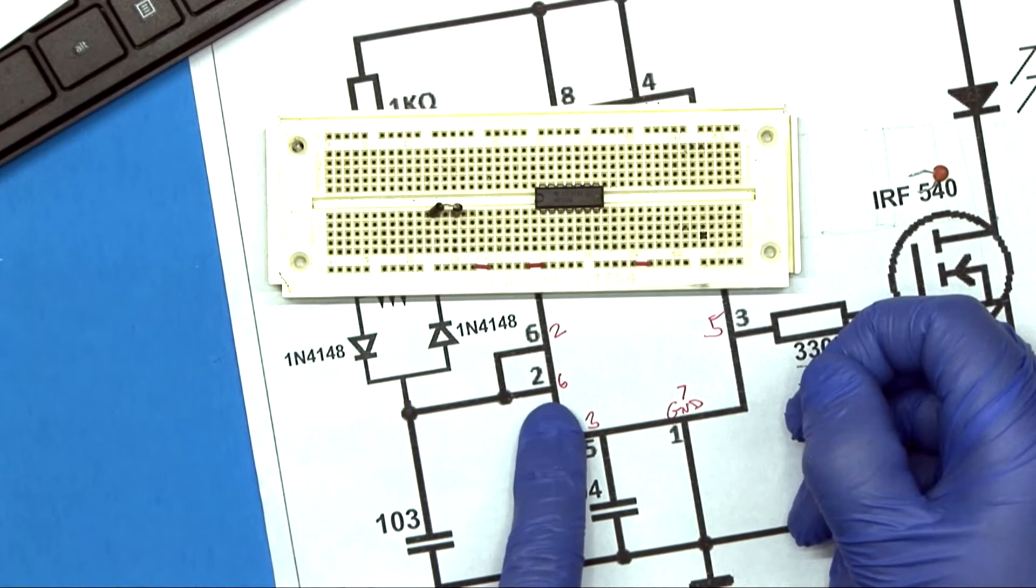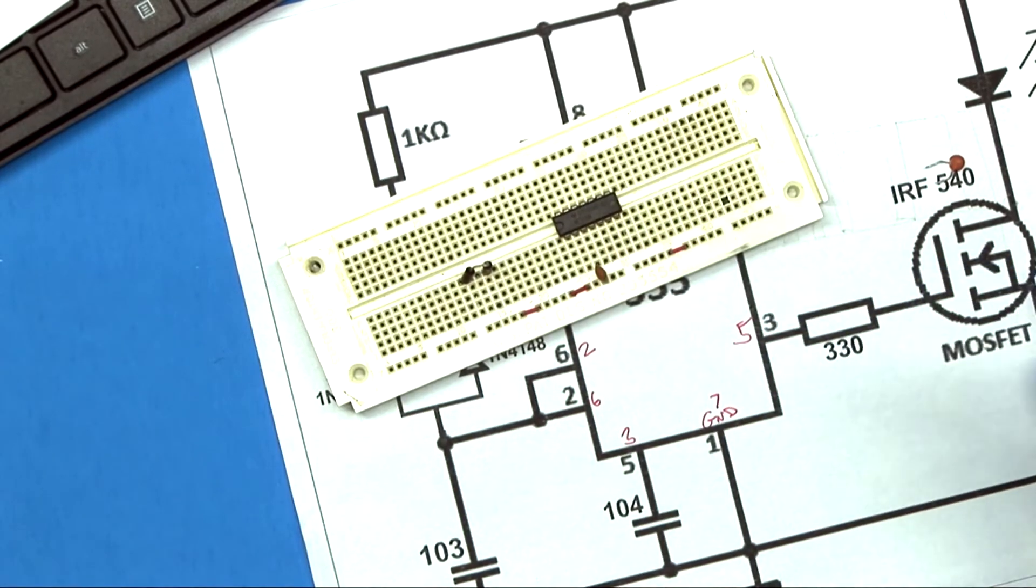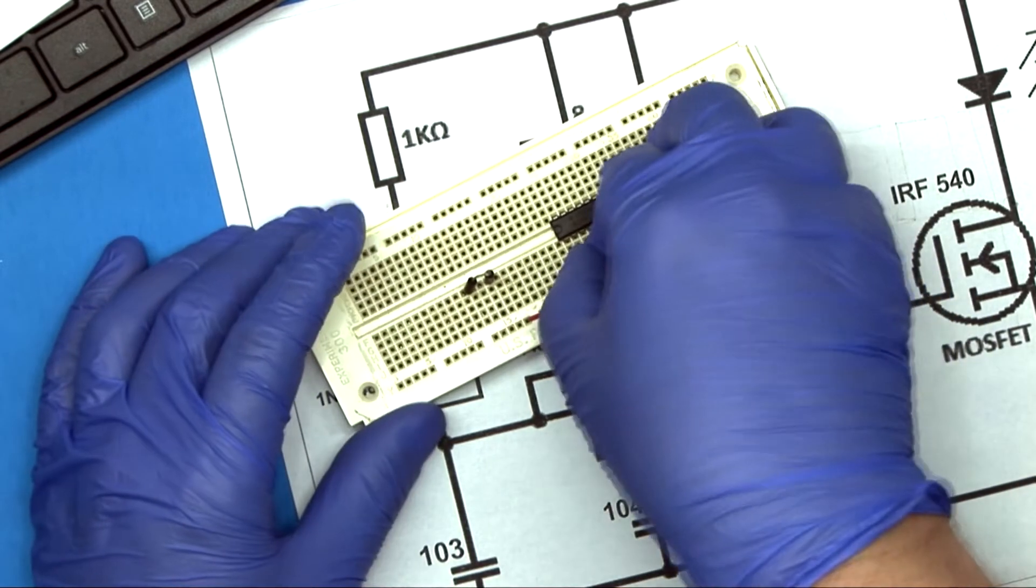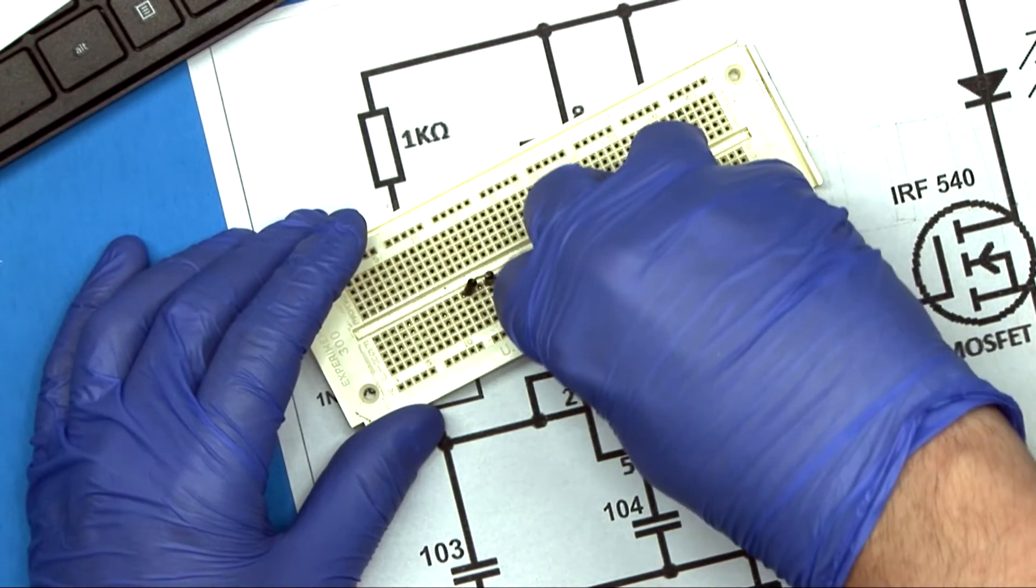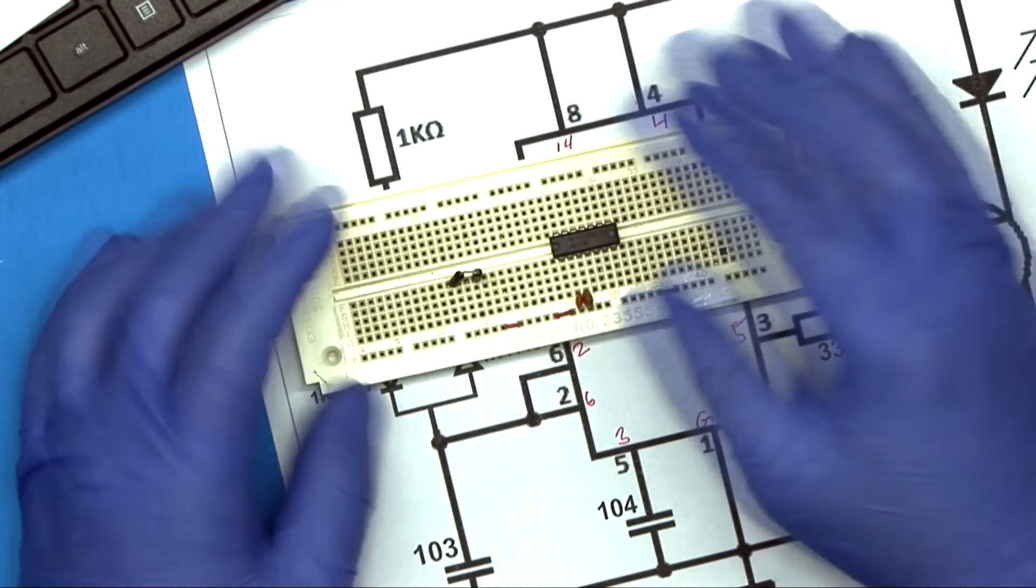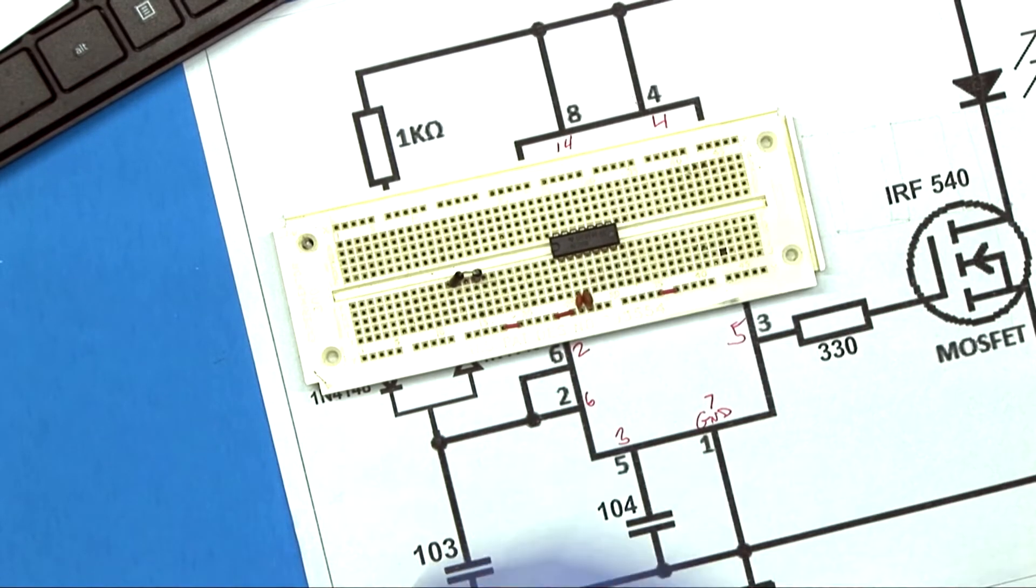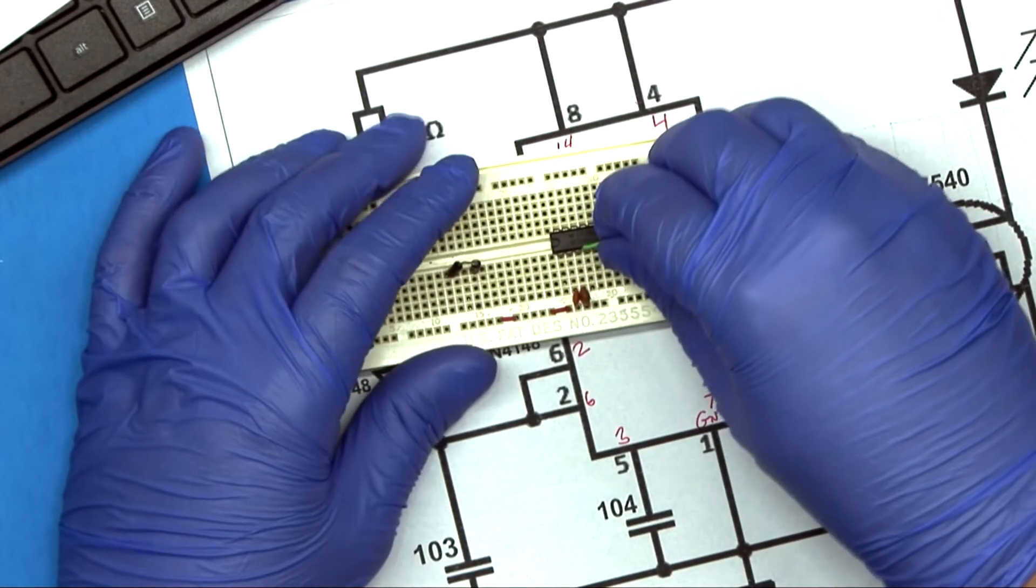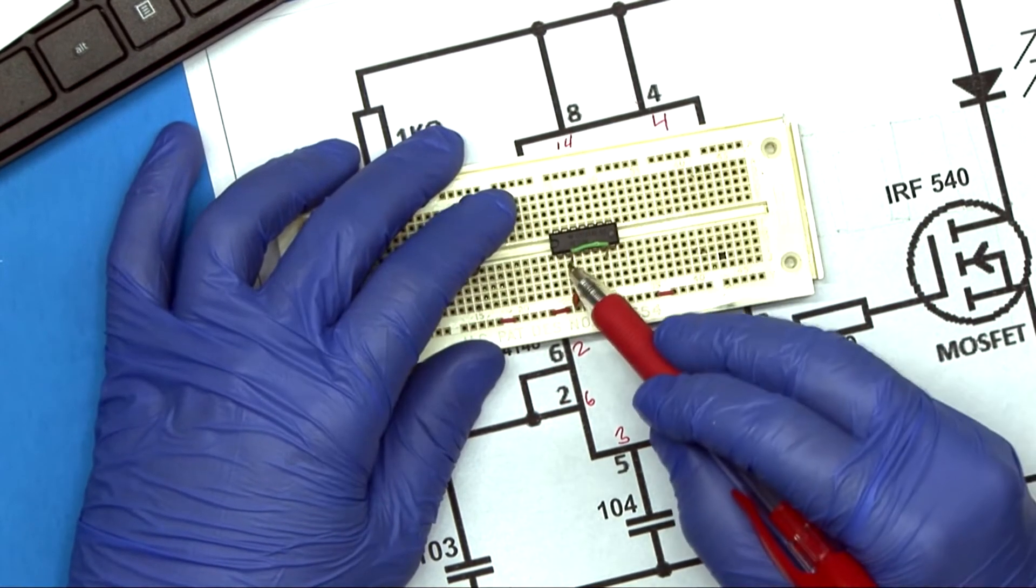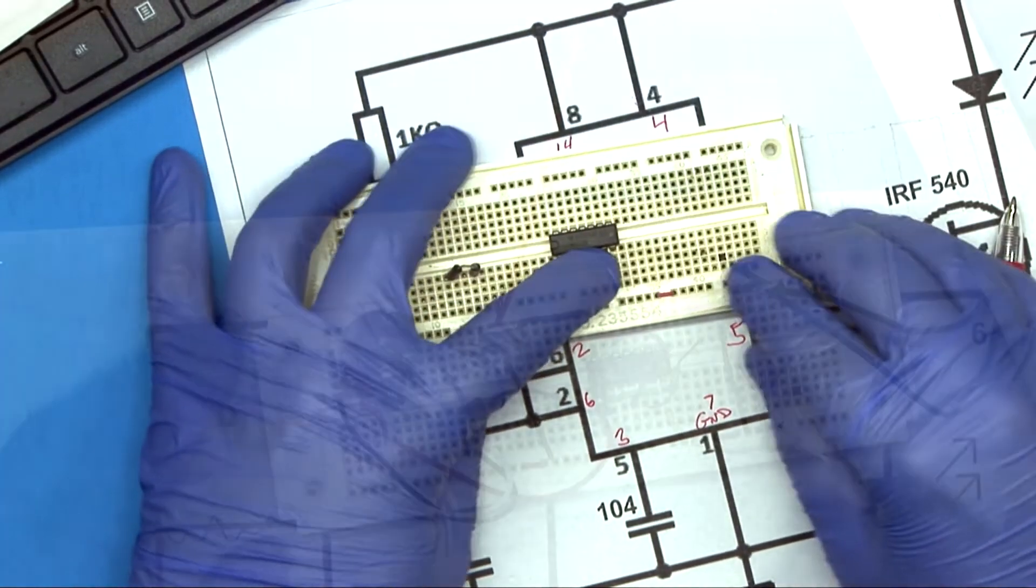So 104, which is 0.01, is going to be 3. So we'll just drop 3 straight to ground. And then we're going to go to 6 straight to ground. Or 2. Since 6 and 2 are bridge, we're just going to take it right off 2 for the other cap, which is a 0.1 microfarad.